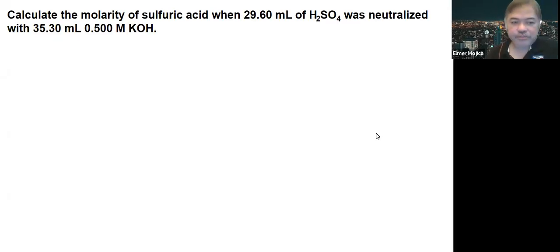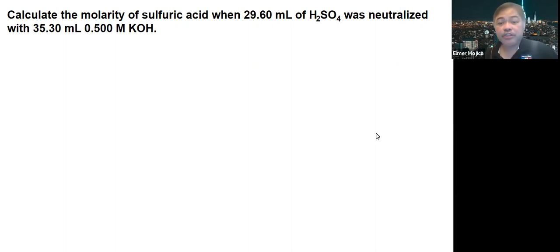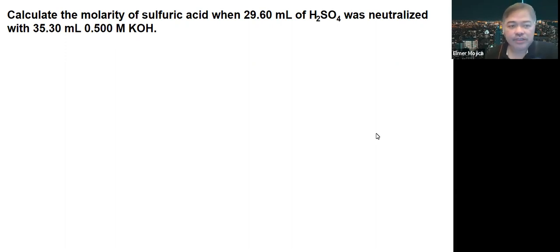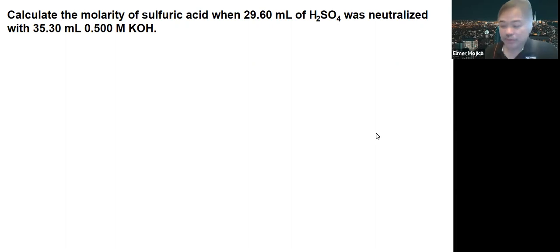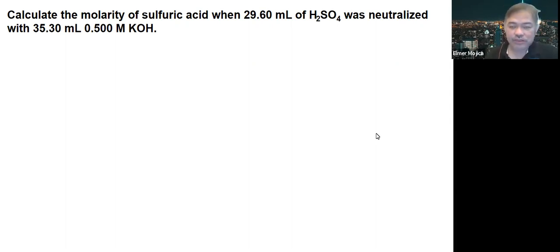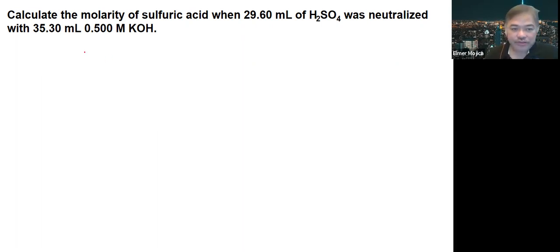For this next problem, we are asked to calculate the molarity of sulfuric acid when 29.60 mL of sulfuric acid was neutralized with 35 mL of 0.5 molar KOH. Now, this is not a 1 to 1 mol ratio — it was a C1V1 = C2V2 situation, but unfortunately it's not that simple.